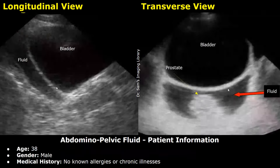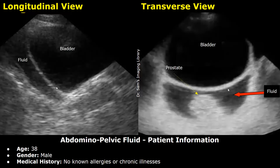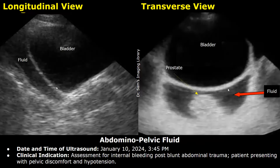Now we have another example of abdominal/pelvic fluid. Age 38, male, with no known allergies or chronic illnesses. Date and time: January 10, 2024, 3:45 PM. Clinical indication: assessment for internal bleeding post blunt abdominal trauma, patient presenting with pelvic discomfort and hypotension.